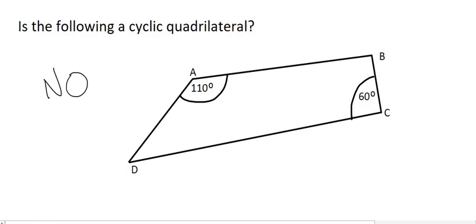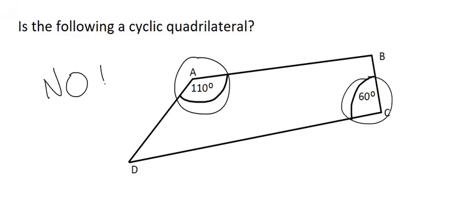Well done if you said no. The reason is that the opposite angles of a cyclic quadrilateral should always add up to 180. However, those two add up to 170. What that means is that this four-sided shape would not fit into a circle.